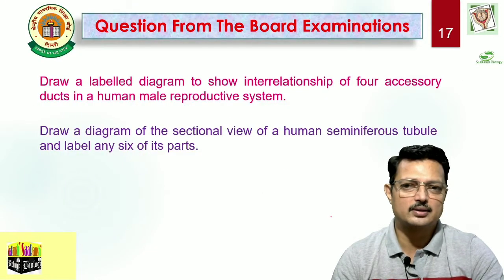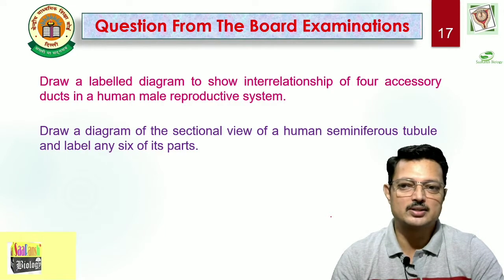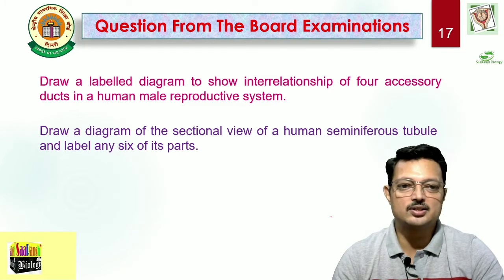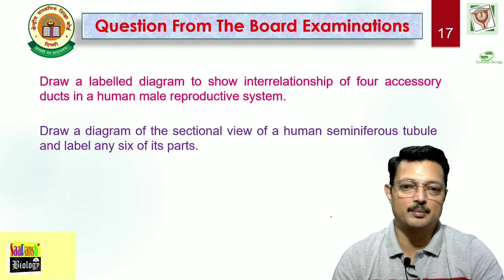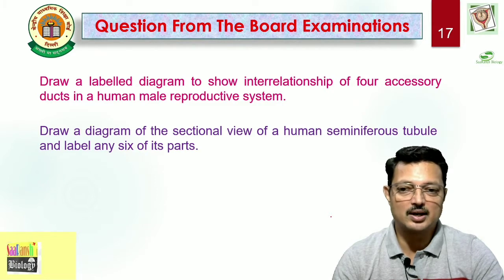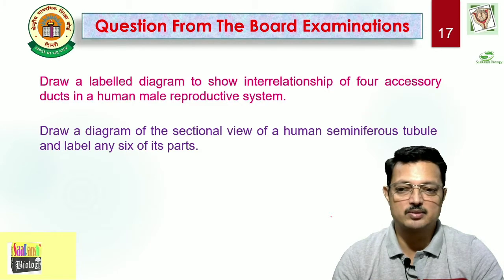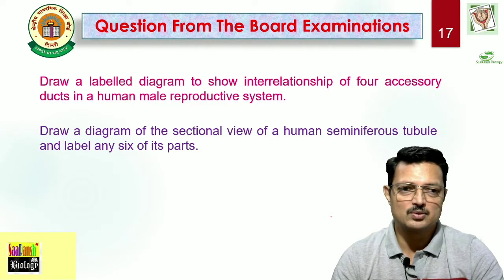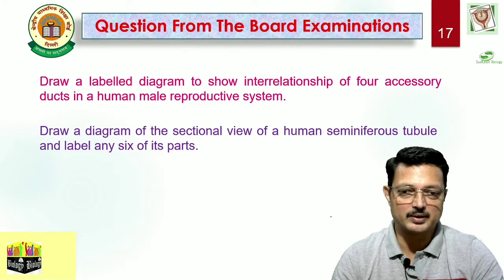Let us look at a few sample questions from the board examination that CBSE asks. First: draw a labelled diagram to show the inter-relationship of four accessory ducts in the human male reproductive system. Second: draw a diagram of the sectional view of the human seminiferous tubule and label its parts. These are important from a diagrammatic perspective.